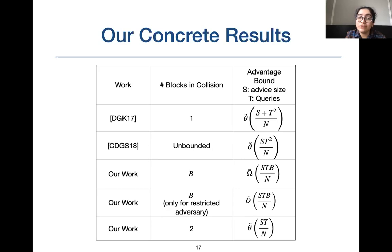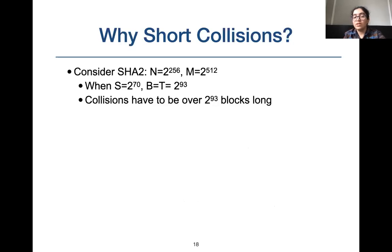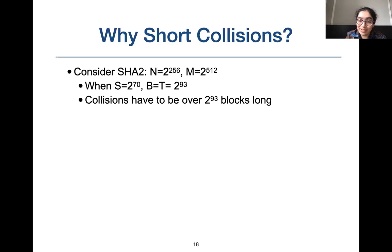The optimal attack from Coretti et al. finds colliding messages of length order T. For SHA-2 with 256-bit hash output and 512-bit input block size, when s = 2^70, the attack finds collisions of size 2^93 blocks making about 2^93 queries — several yottabytes long. Messages this long do not exist in the practical world. Think of applications where hash functions are used: digital signatures or MACs — no one sends messages that long. Passwords hashed and stored are generally about 8 to 16 characters long. This motivates studying short collisions with pre-computation in MD structures.